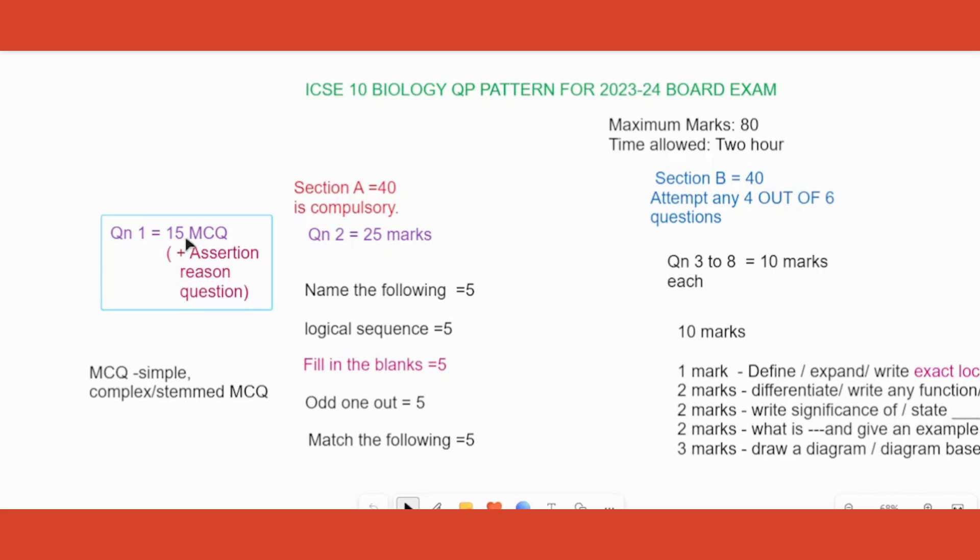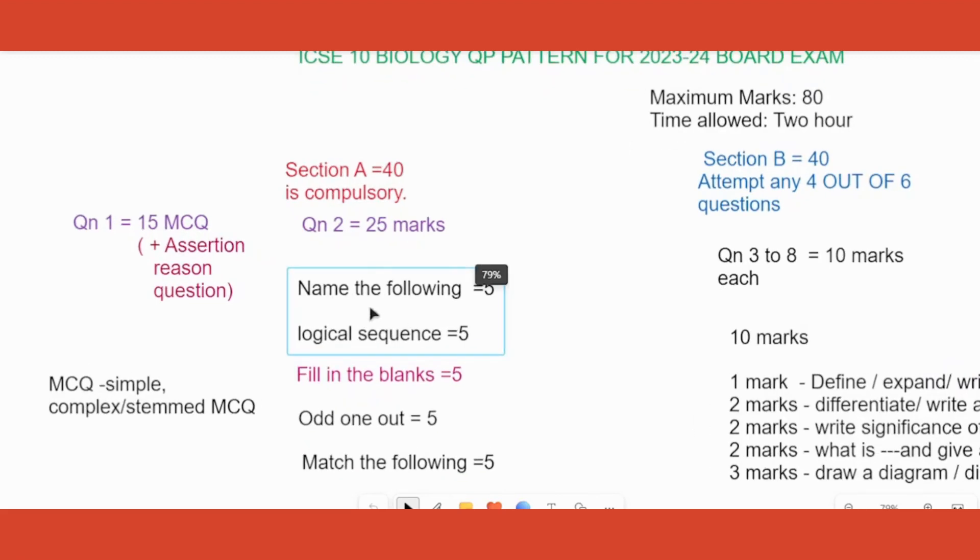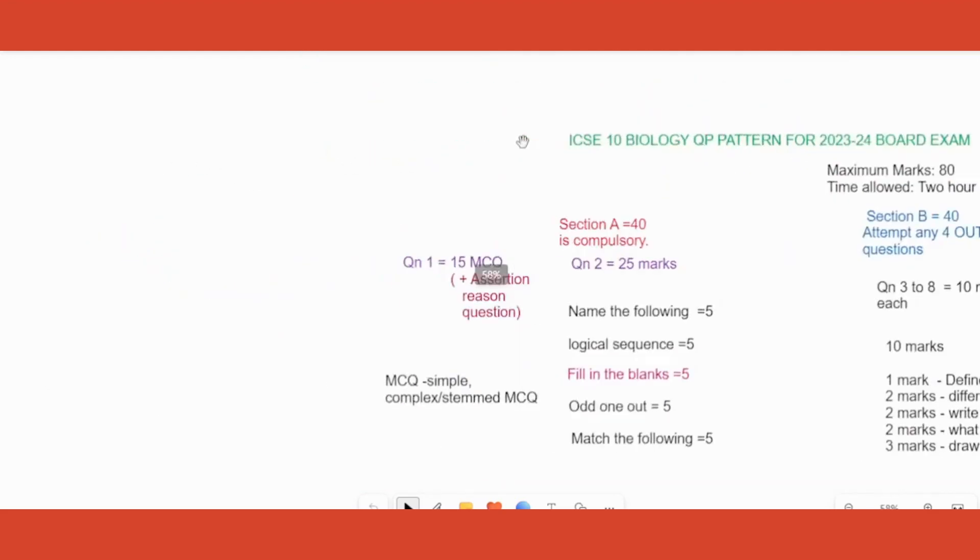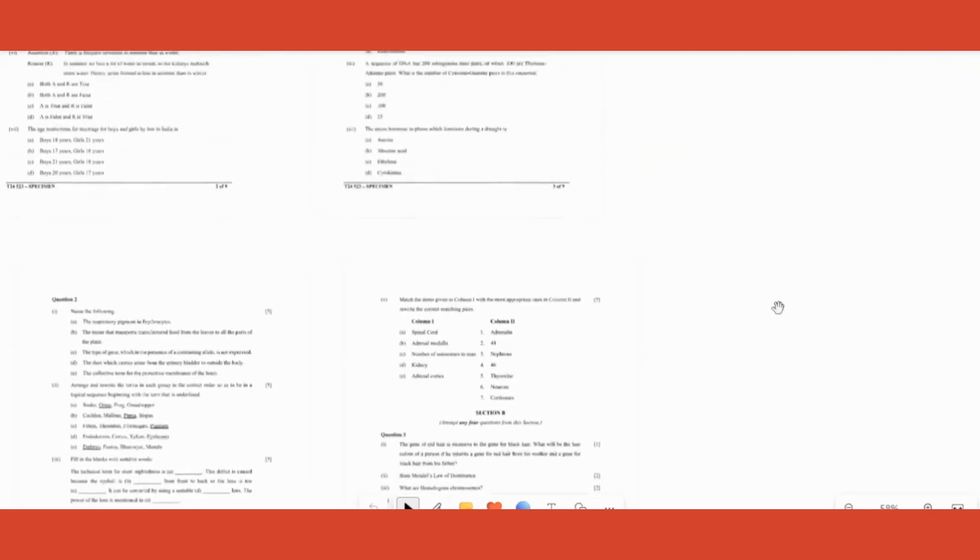Next question is for 25 marks which is subdivided as the following: name the following, logical sequence question, fill in the blank, odd one out, and match the following. All of it carries five marks and each heading will have five questions each. Name the following will be five, logical sequence will be five, and so on.